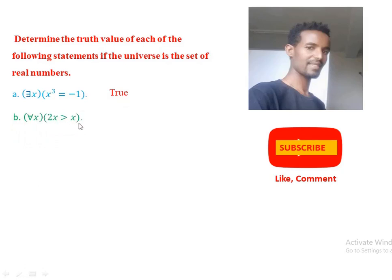Statement (b): for every x, 2x is greater than x. Since our universe is the real numbers, let us take a number. For example, if x = 2, then 2 times 2 is 4, and 4 is greater than 2. But if we take x = 0, then 2 times 0 is 0, and 0 is not greater than 0. Therefore this statement has truth value: false.